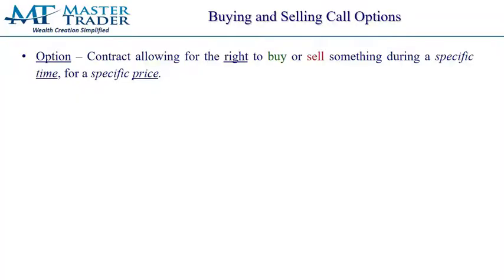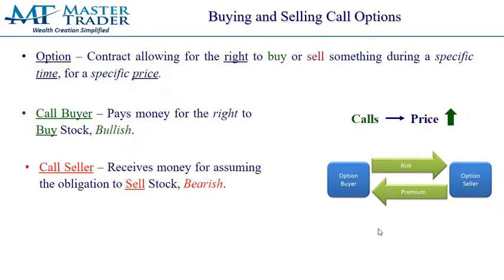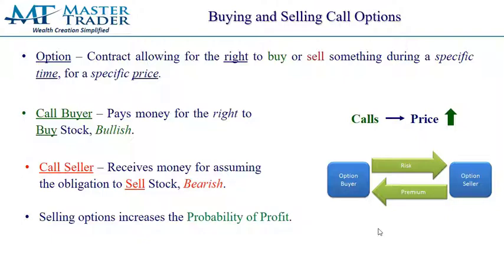Let's start with some basic terminology. An option is a contract allowing for the right to buy or sell something during a specific time for an agreed-upon price. Call buyers pay money for the right to buy stock and they're bullish on the position. Call sellers — which is going to be us in this lesson as the covered call writer — are receiving money and have the obligation to sell the stock at the agreed-upon price on or before expiration if the buyer wants to buy it at that price, which the buyer will only do if the price of the stock is in the money.